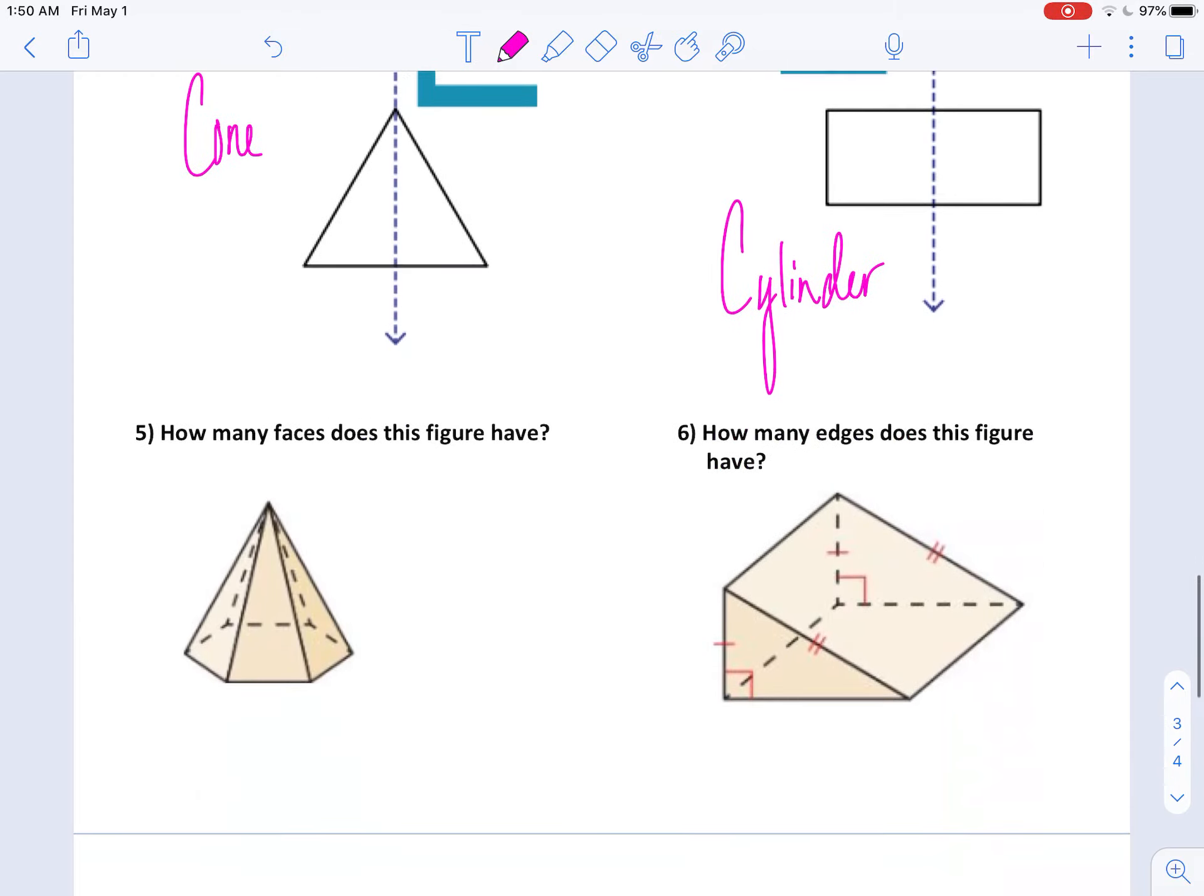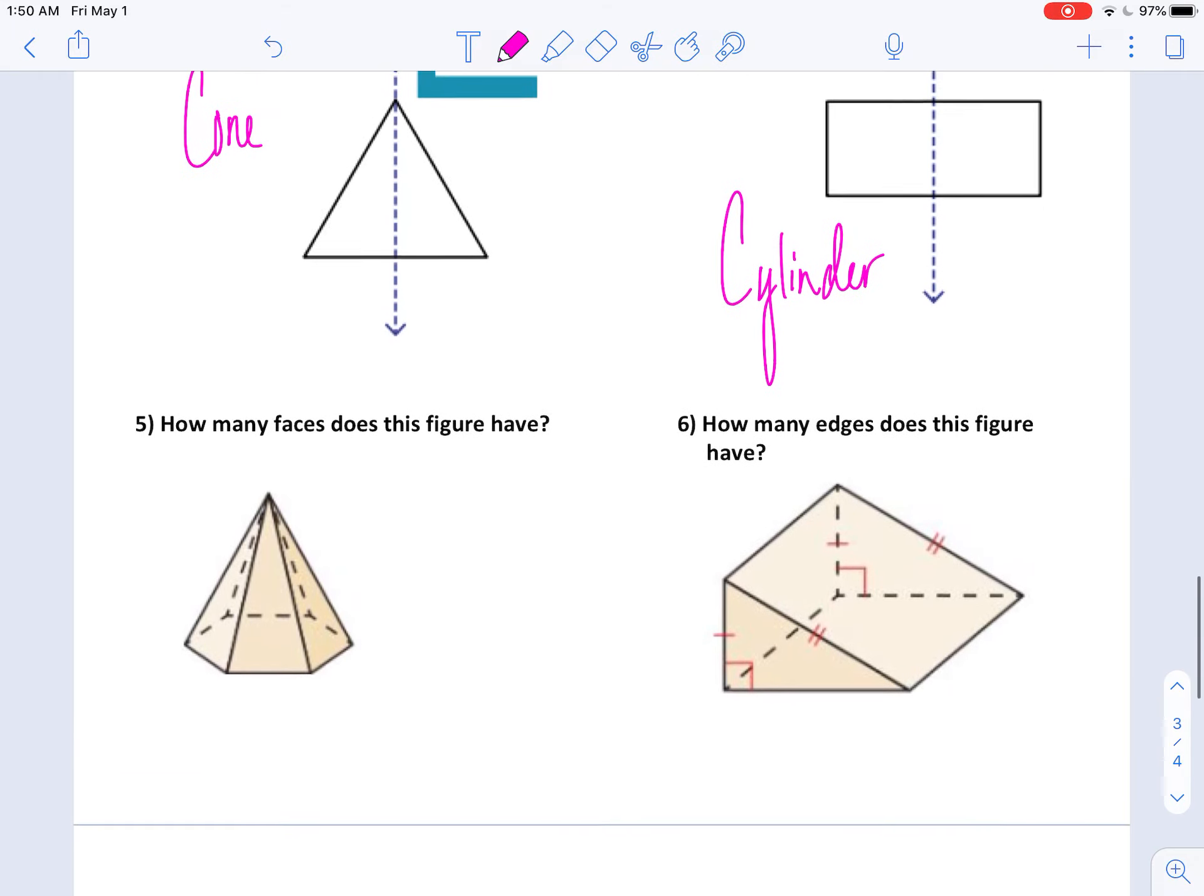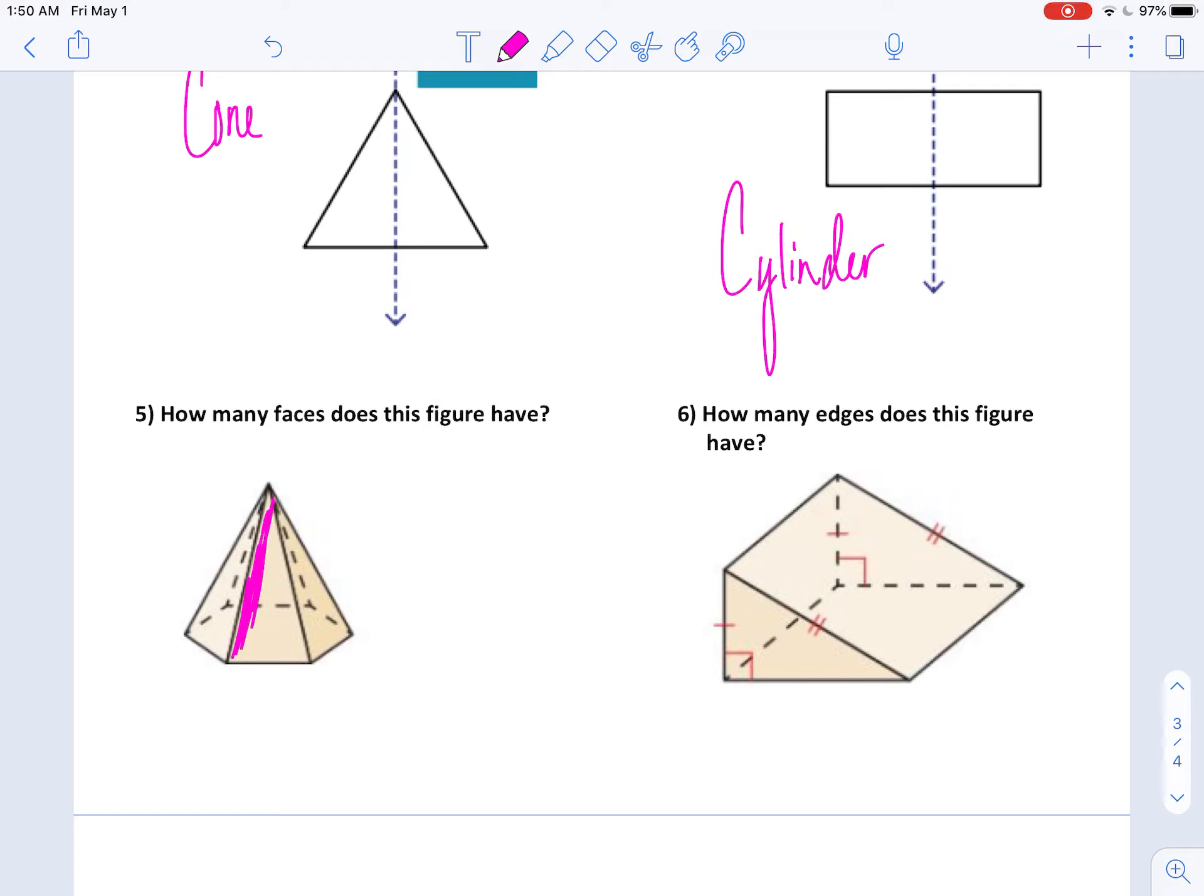And last but not least. Looking at faces and edges. Faces are, again, these 2D shapes. You want to identify how many of these. And what you can do is you can look at the base to help you out. So how many triangles do I have? Well, I've got one coming off of each side. So 1, 2, 3, 4, 5, 6. So I have 6 triangles. But I can't forget about this hexagon base. So plus 1 base gives me 7 faces.